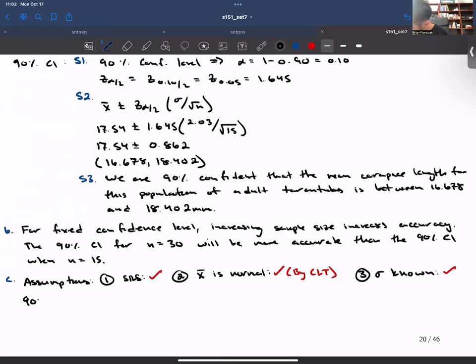So now we have the 90% CI. So we know from above that this means that our Z score is going to be the Z score on 0.05, which is 1.645. That's step one.